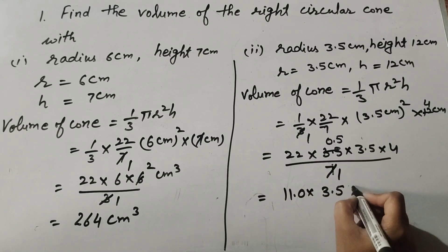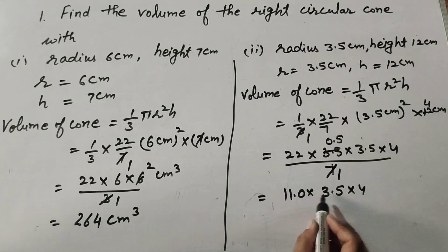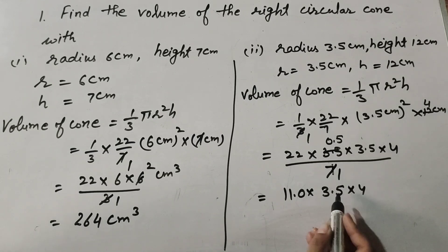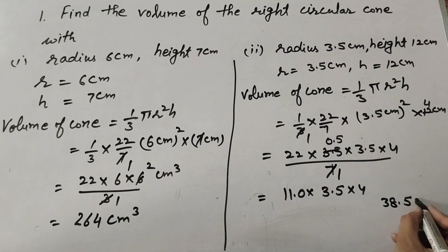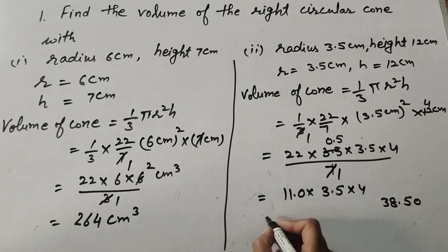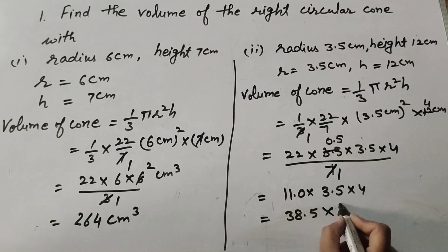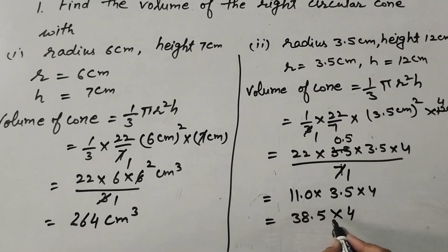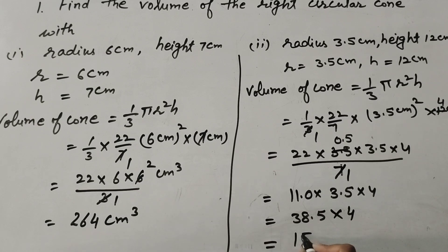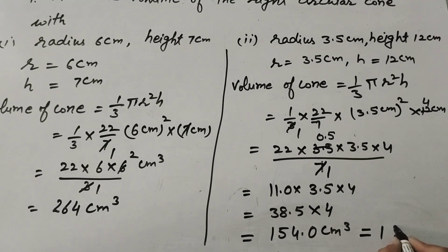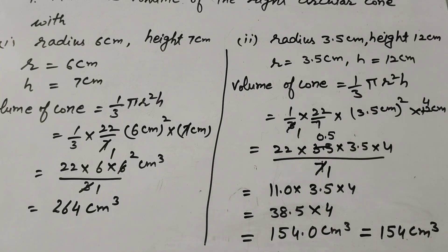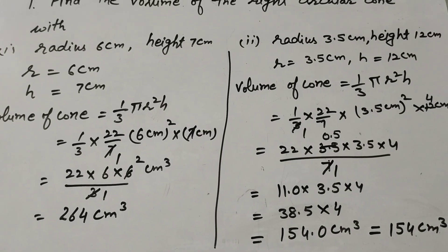Continuing: 11 × 3.5 = 38.5, and 38.5 × 4 = 154.0. So the volume of the cone is equal to 154.0 centimeter cube.